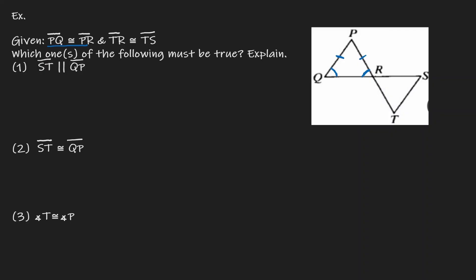Let's take a look at the next given. The next given is that TR is congruent to TS. So TR is congruent to TS. Again, notice that we have another isosceles triangle here — those two sides are congruent, therefore the whole triangle is isosceles. And if that's the case, then I know that opposites are congruent to each other. So therefore this angle, angle R, will be congruent to angle S.